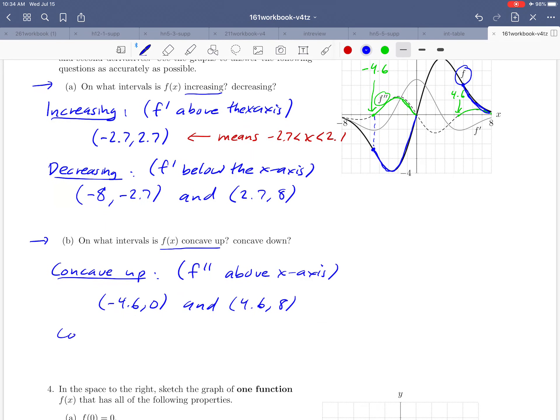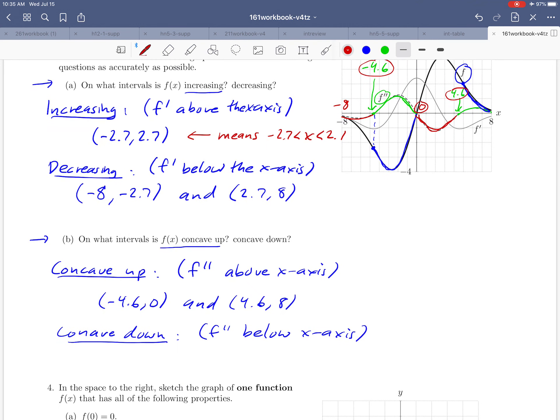And then similarly concave down just the other way around. Now we're looking for where the second derivative is below the x-axis. And let's see there's one stretch there and then another stretch there. And let's see if we nail down the intervals, we started at negative 8 and went until negative 4.6, that's the first place where the second derivative was negative, and then another interval from about 0 to 4.6. So two intervals again.